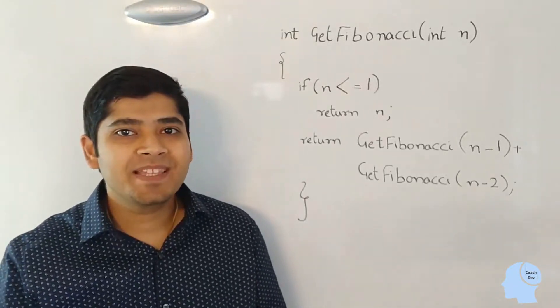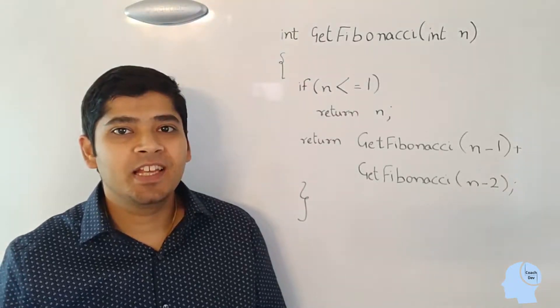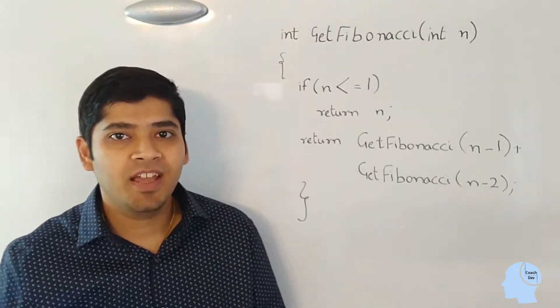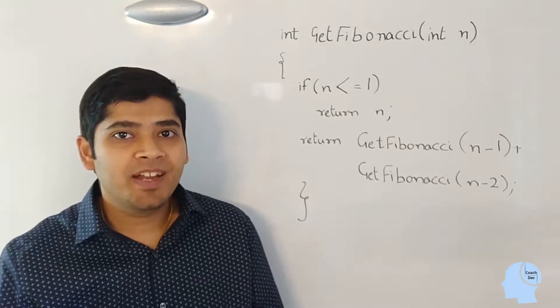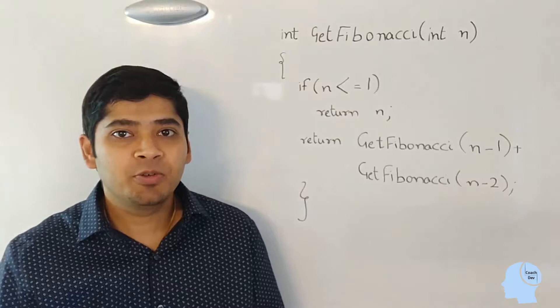So, this is how the recursive solution will look like. I have the base condition in my recursive solution that if n is less than equal to 1, then return n. Otherwise, get the Fibonacci at n minus 1 and get the Fibonacci at n minus 2, sum them up and return the result.